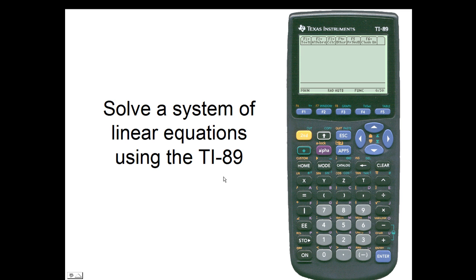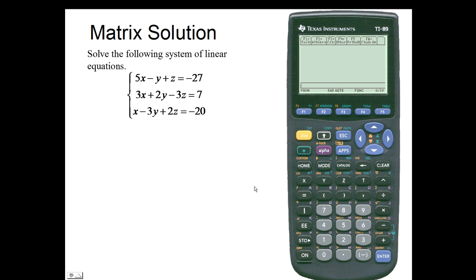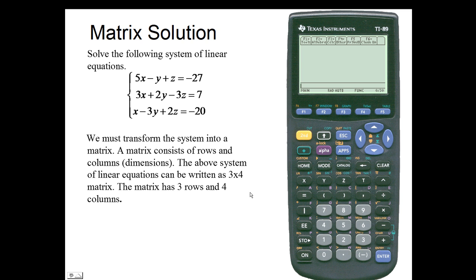Solve a system of linear equations using the TI-89 matrix solution. We must transform the system into a matrix. A matrix consists of rows and columns, or its dimensions. The above system of linear equations can be written as a 3 by 4 matrix, a matrix that has 3 rows and 4 columns.